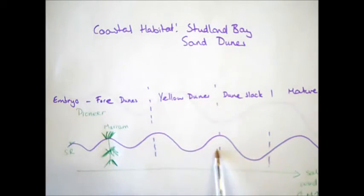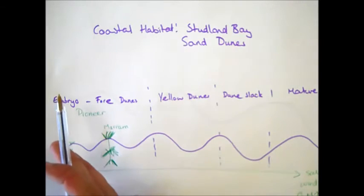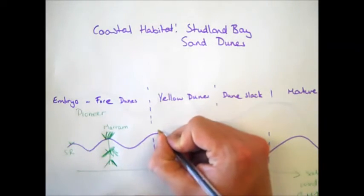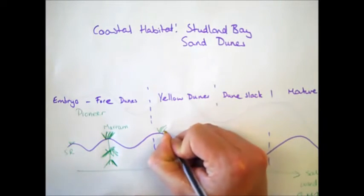We then move into the next section, the yellow dunes. By now, our salt content is starting to decrease. We are moving away from the sea, so the salt content and the wind content has gone down. What we start to see is that we still have species such as marram grass.